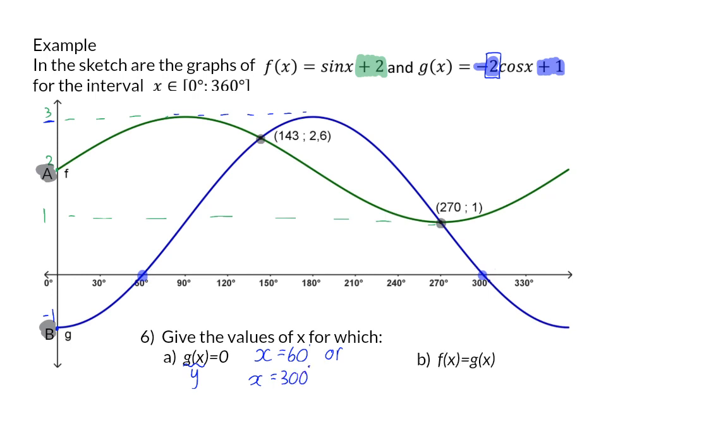Question 6b: Give the values of x for which F(x) is equal to G(x). This means we are looking for the x-coordinates where the graphs intersect, and these coordinates are given to us. They ask for the x values, so that will be x = 143 or x = 270 degrees.